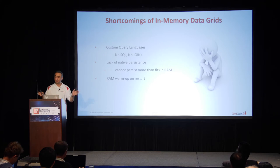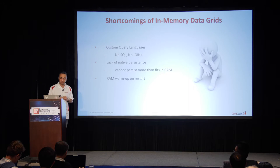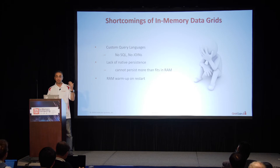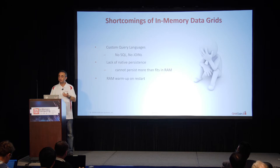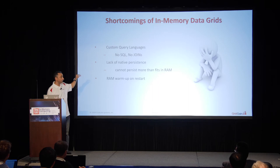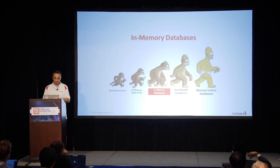There are redundant copies in memory, but if your whole cluster goes down, you would lose your data without persistence. Just as with distributed caches, you have to warm up on restart — if you restart the cluster, you have to preload the data from disk into the memory data grid before it becomes operational. To address these problems — for example, SQL and querying — we move to the next step in the evolution.